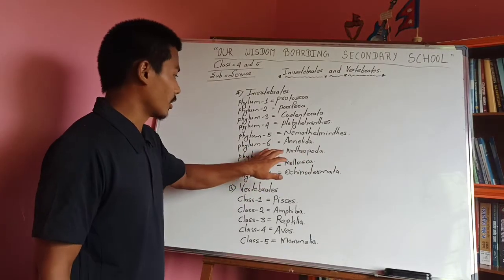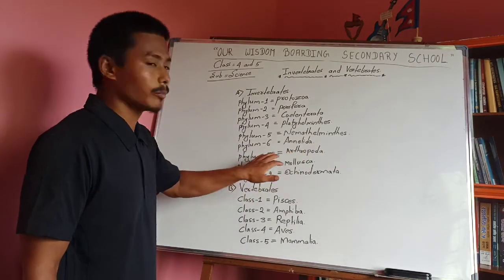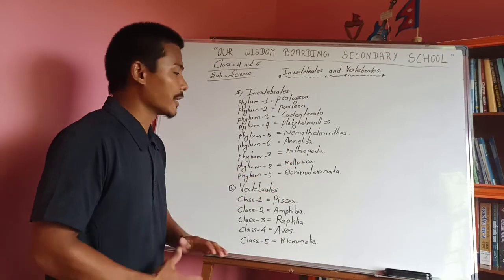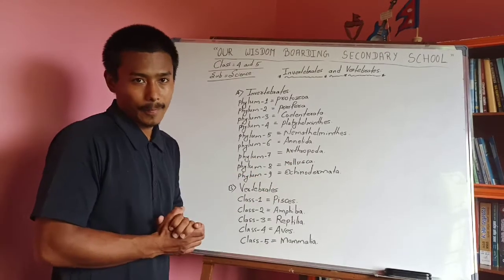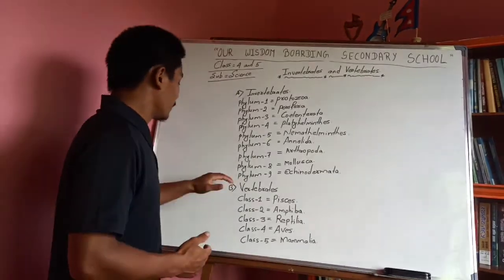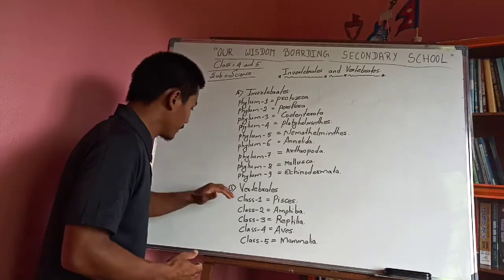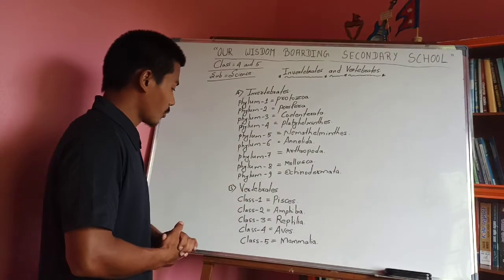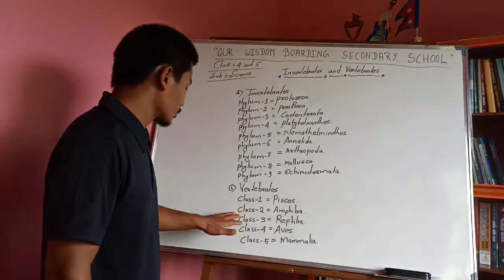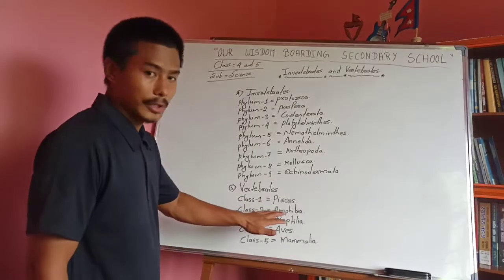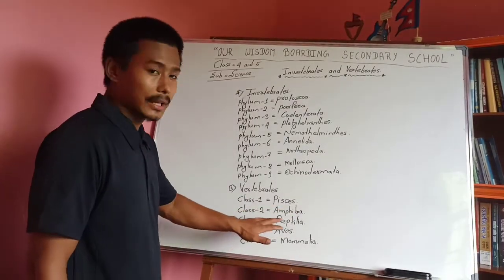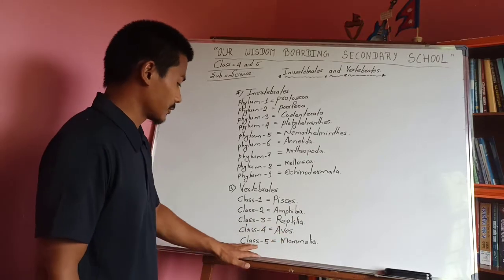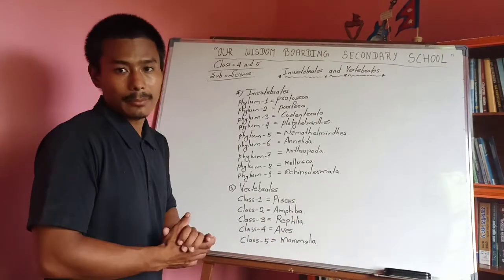Phylum 6 is Annelida. Phylum 7 is Arthropoda. Phylum 8 is Mollusca. Phylum 9 is Echinodermata. For vertebrates: Class 1 is Pisces, Class 2 is Amphibia, Class 3 is Reptilia, Class 4 is Aves, Class 5 is Mammalia.